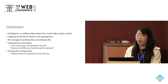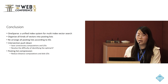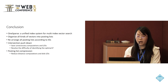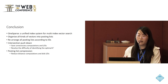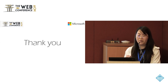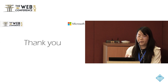In conclusion, we propose OneSparse, a unified index system for multi-index vector search. It organizes all kinds of vectors into posting lists, unifying the index structure, and rearranges posting lists by document IDs to enable intersection pushdown, saving computation and IOs for unnecessary candidates. It also resolves the difficulty of identifying the optimal k-prime. We applied vector posting list compression using centroid vectors to represent full vectors in posting lists, further reducing distance computation and disk IOs. We hope OneSparse can enable more retrieval systems to operate on hybrid datasets much more practically.